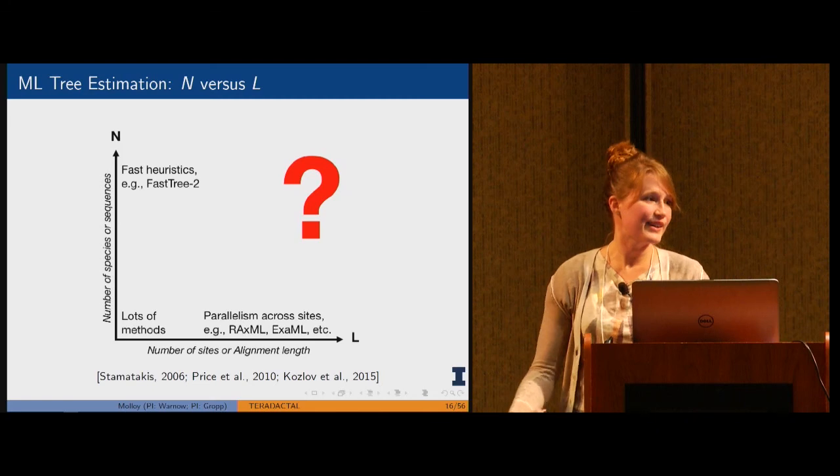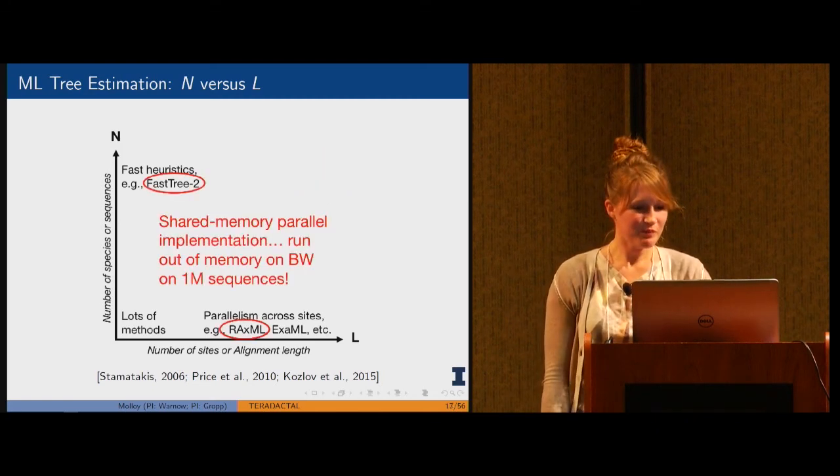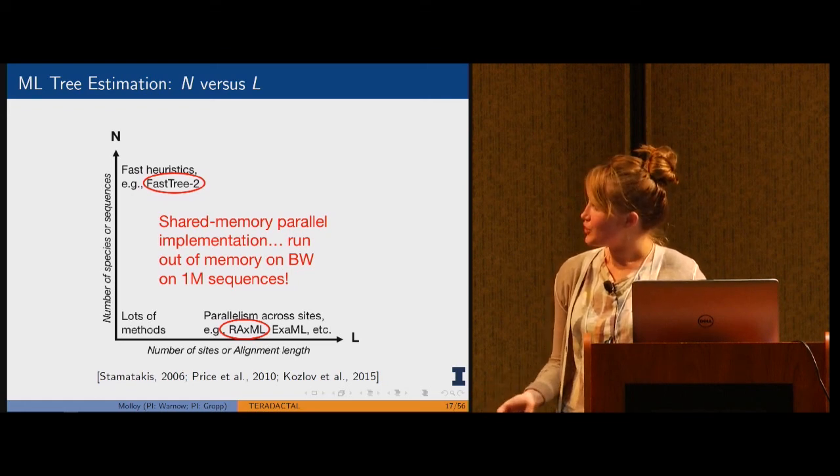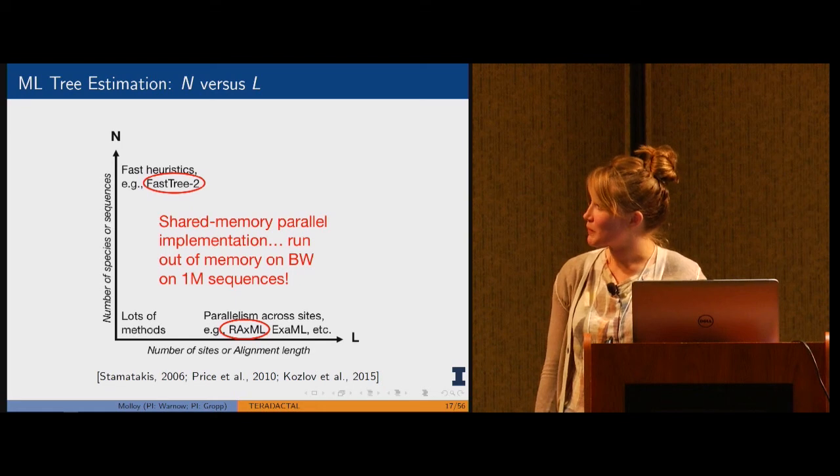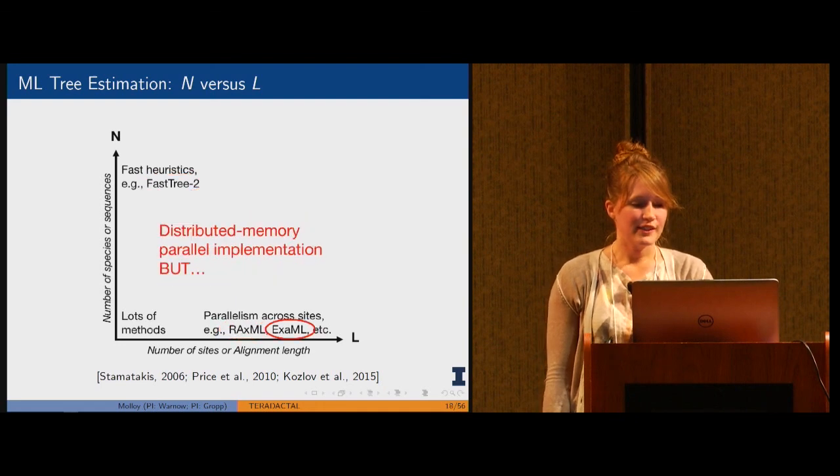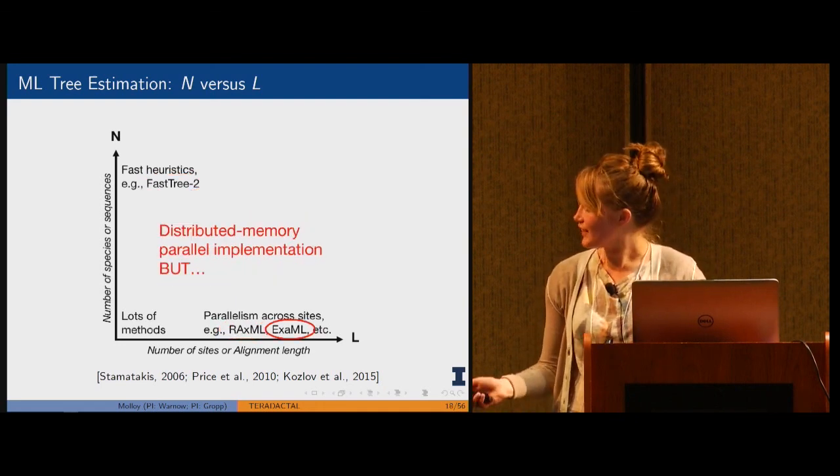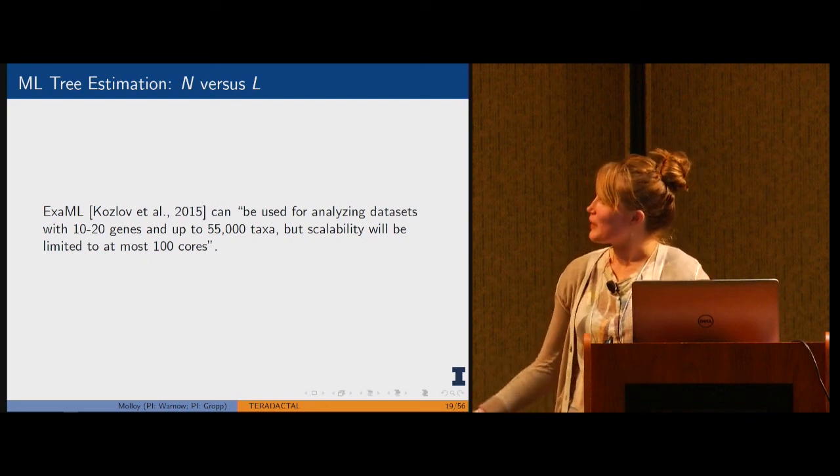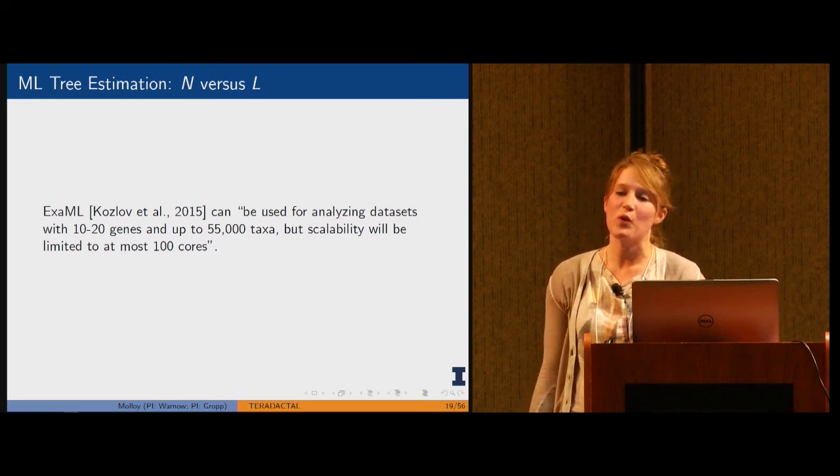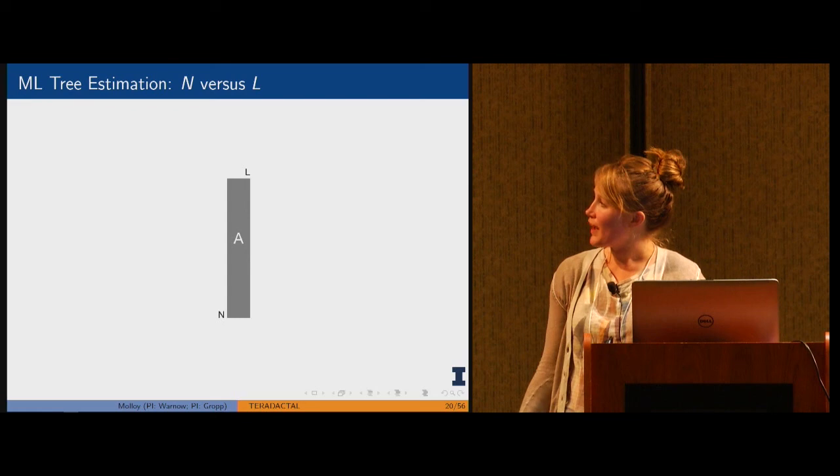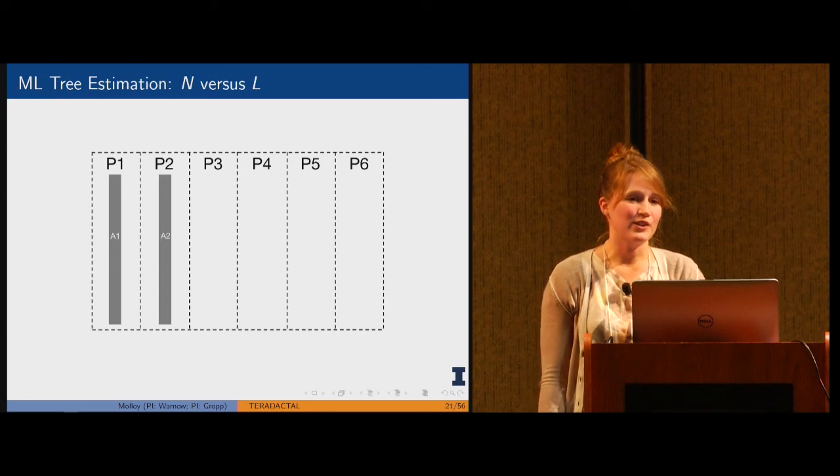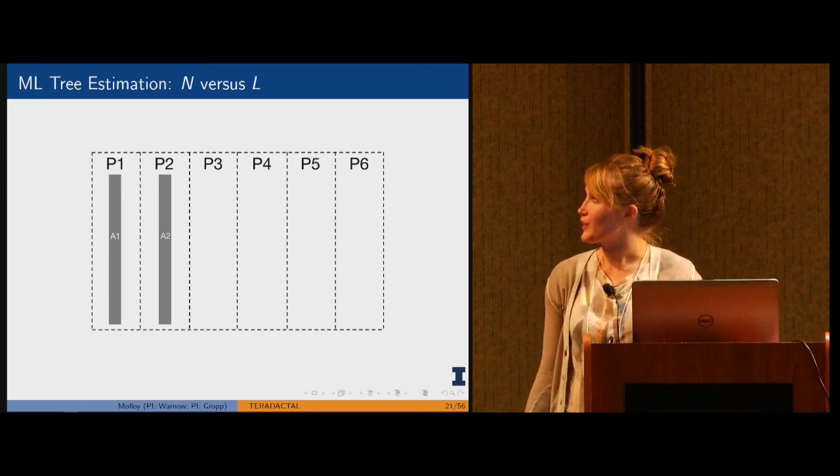I also want to note that both FastTree2 and RAxML have shared memory parallelism, so on Blue Waters they'll run out of memory very quickly on a single node. ExaML is distributed memory parallel, but there's this quote from the paper that says it's really limited to around 50,000 taxa and you're limited to 100 cores on these types of data sets because if you imagine an alignment with a much larger n than l, you basically can't divide it up along the l dimension really easily and a bunch of your cores are going to be idle.